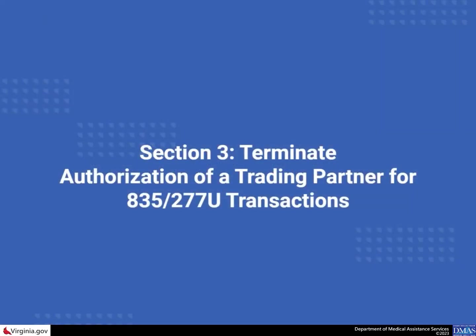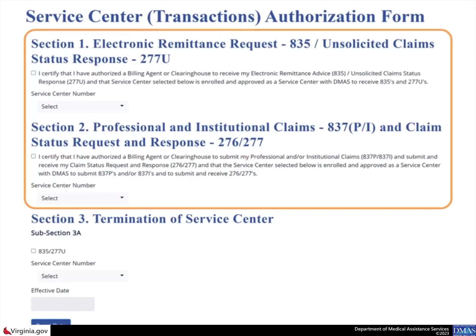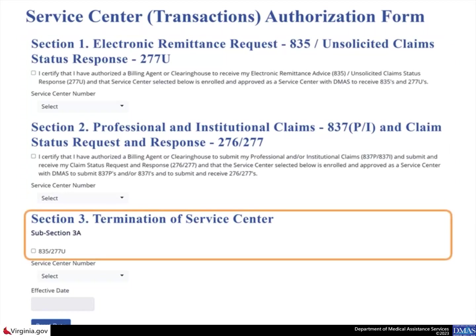This scenario shows how to terminate an authorization of a trading partner for electronic remittance advice, 835, and unsolicited claim status response, 277U transactions. For this scenario, skip Sections 1 and 2 as they are related to authorizations, and this scenario is for terminations. In Section 3, Subsection 3A on the Provider EDI Authorization page, select the checkbox for 835 and 277U.